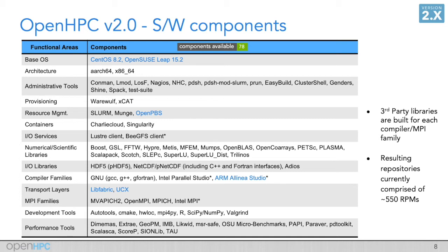namely LibFabric and UCX. And that has some impact on the MPI builds that we have. I'll highlight fabric support in a second. But if you add all the combinations of software that we have as part of OpenHPC,